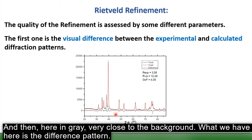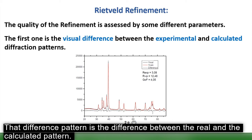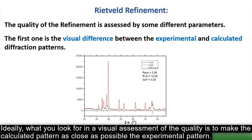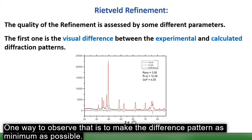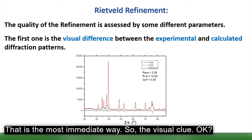In gray, very close to the background, is the difference pattern — the difference between the experimental and the calculated pattern. Ideally, in a visual assessment of quality, you want the calculated (red) pattern to match the experimental pattern as closely as possible, making the difference pattern as minimal as possible. That's the most immediate visual indicator.